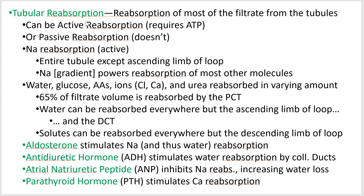Tubular reabsorption. Filtration occurs — that first step occurs only at the corpuscle. So filtration is the glomerulus, the capsule, period. From there on, we're going to start reabsorbing stuff, which is taking it back from the tubule, or secreting stuff, which is pushing it out into the tubule. Filtration's first, and then reabsorption and secretion are going to happen kind of side by side.